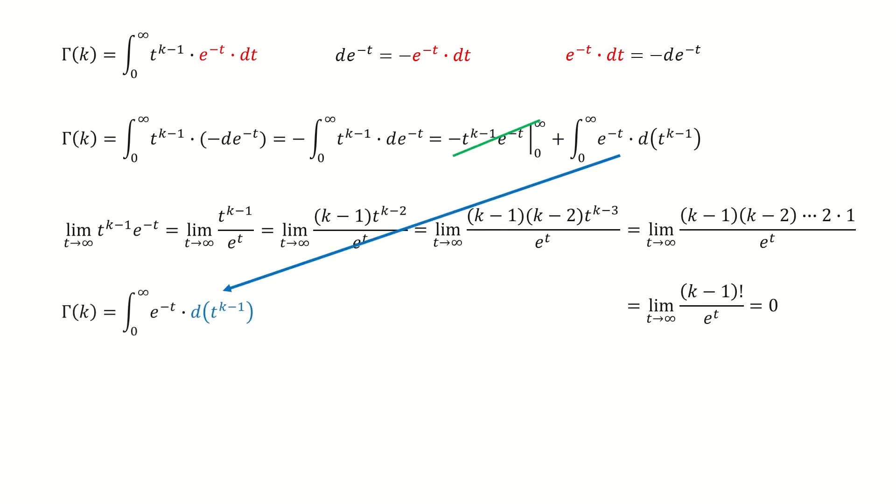Then this equation goes to here. Next, we do the derivative to this blue term. Then we take k minus 1 out of the integral. And next, we write this integral into this form.